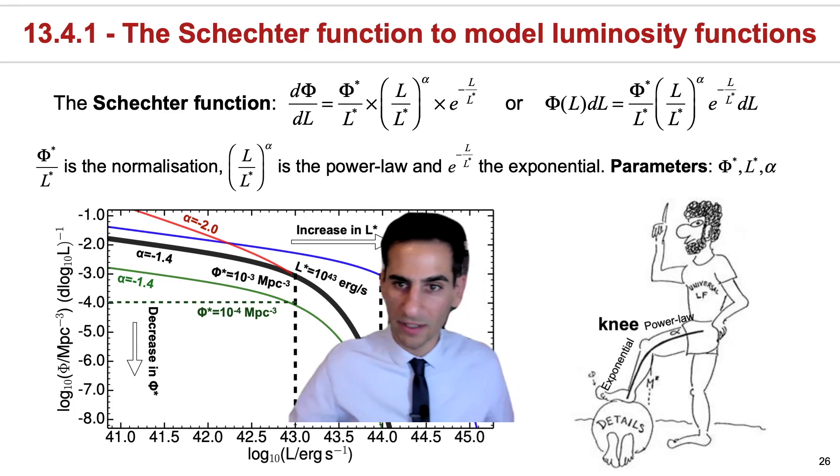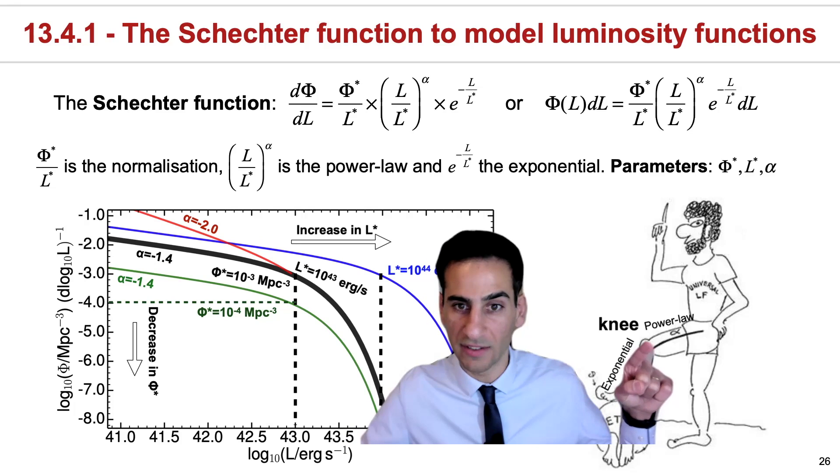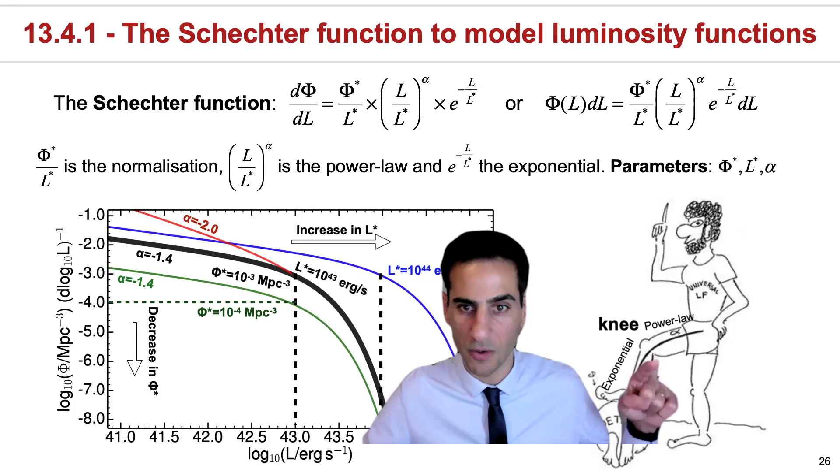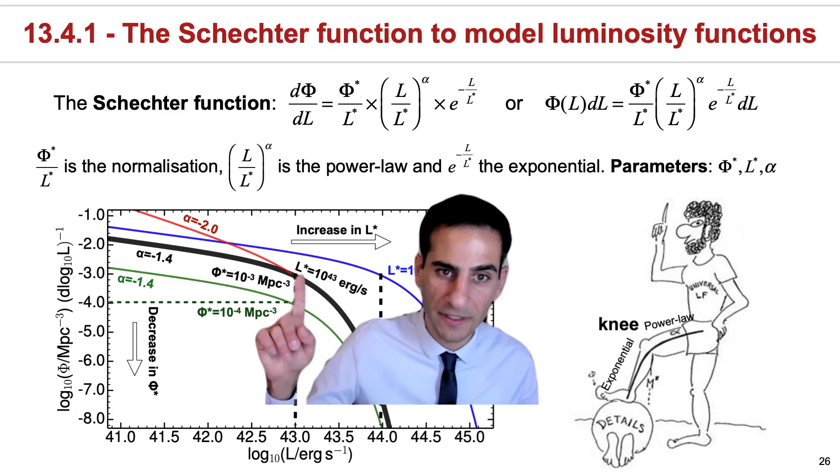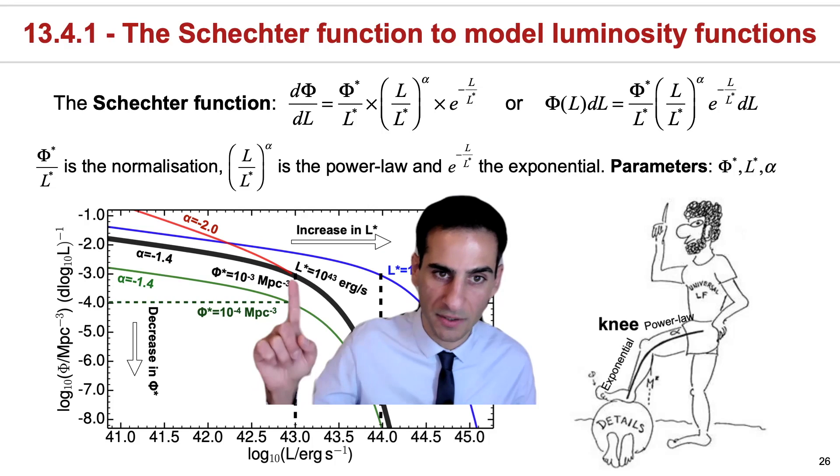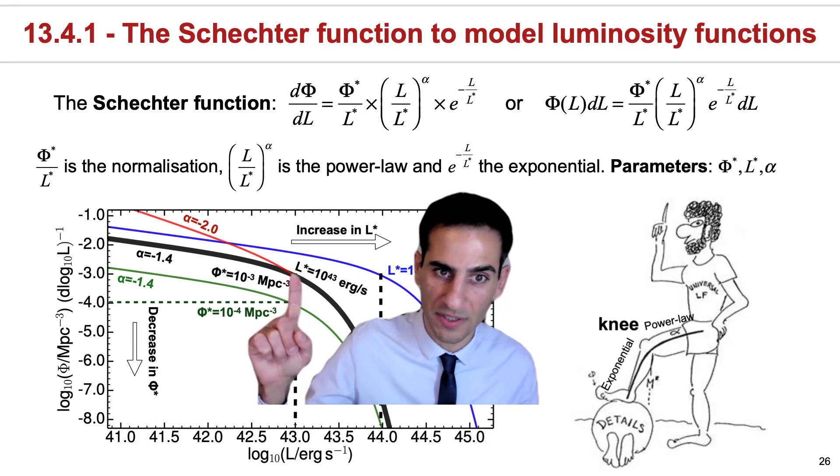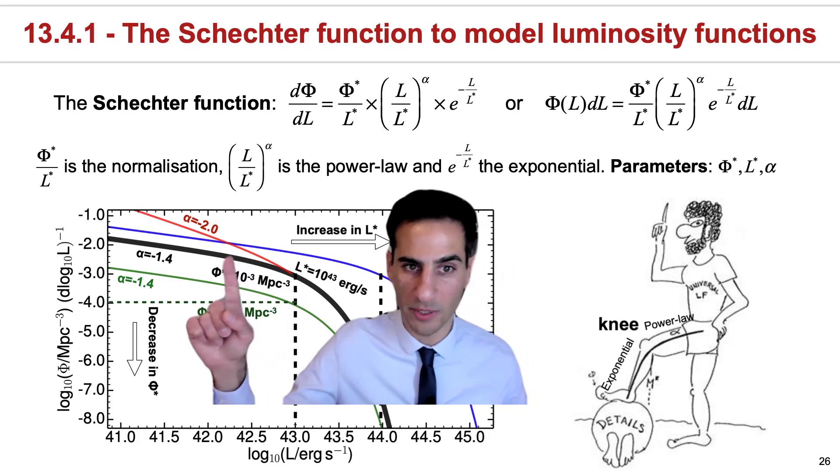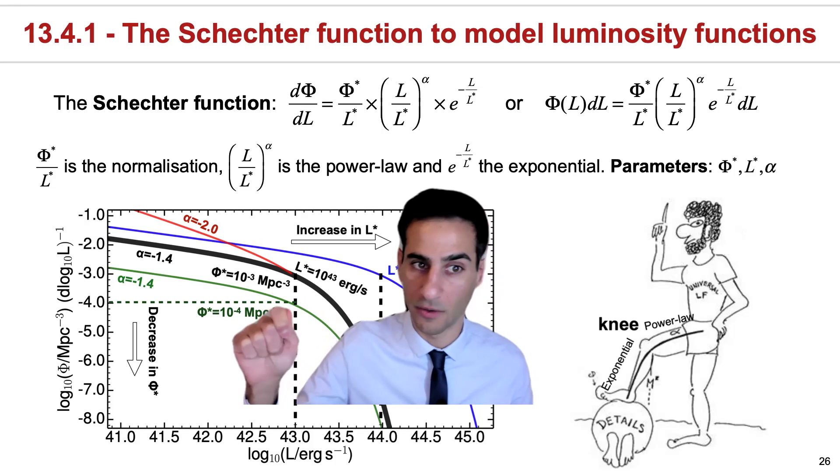This is what we call the knee. And that's why Paul Schechter is here indicating his knee. This is essentially the typical luminosity or the knee. And at the same time, at the knee luminosity, then we also have the typical number density of sources, which is phi star. So if you read off in the Y scale the luminosity corresponding to L star, then you can actually read off phi star. In this case, the number density of sources at which the behavior between a power law and an exponential changes, and one function becomes dominant over the other.